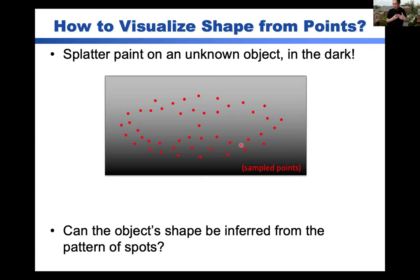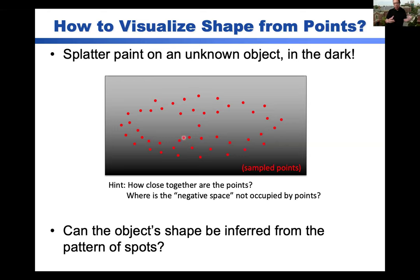As humans, we have a lot of pattern recognition encoded into our brains. There are ways that we can interpret this — we might see how close two spots are to each other, we might recognize regions of negative space. And so we look at it and think: okay, it's something that looks maybe like a pretzel.